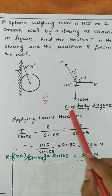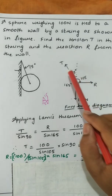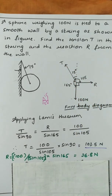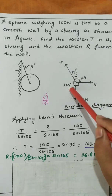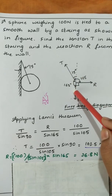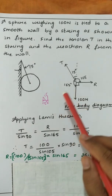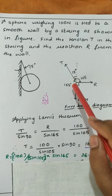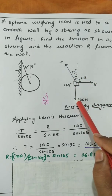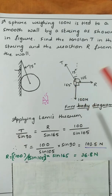This is the free body diagram: 100 N self weight, reaction R from the wall, and tension T in the string. This is a straight line, so it will be 180 degrees. 180 degrees minus 15 gives 165 degrees. To apply Lamy's theorem, we always need the angle between the opposite forces — for R, we need the angle between the other two forces.